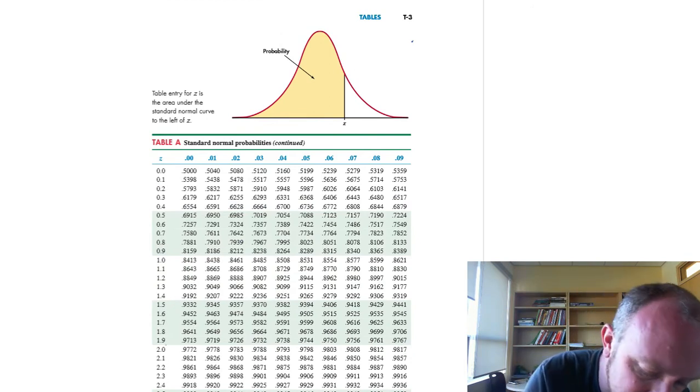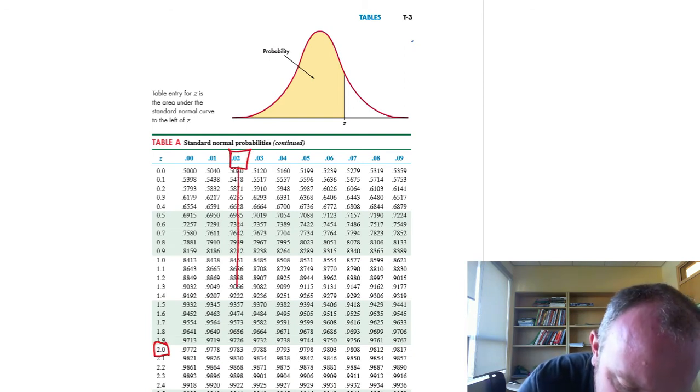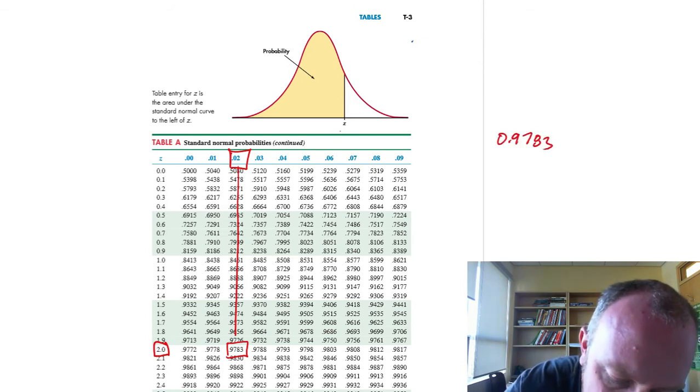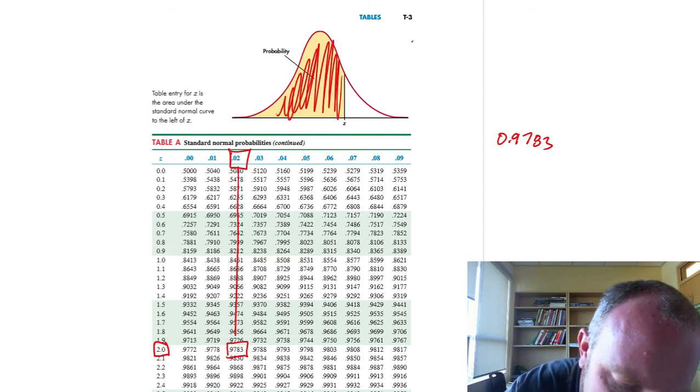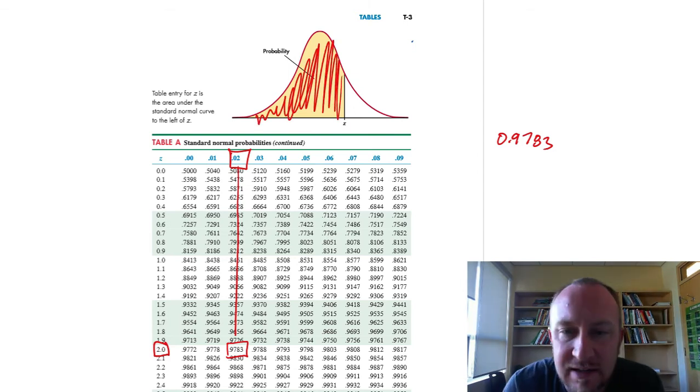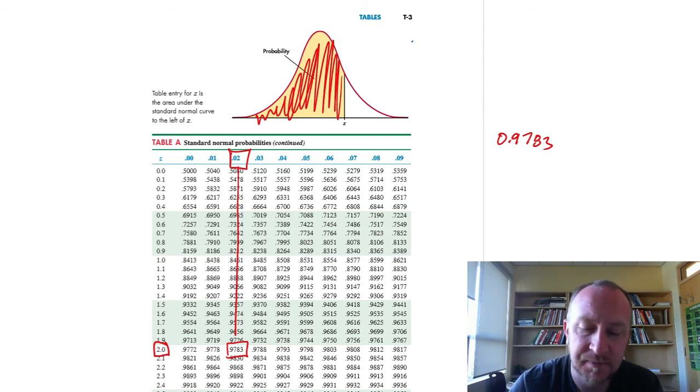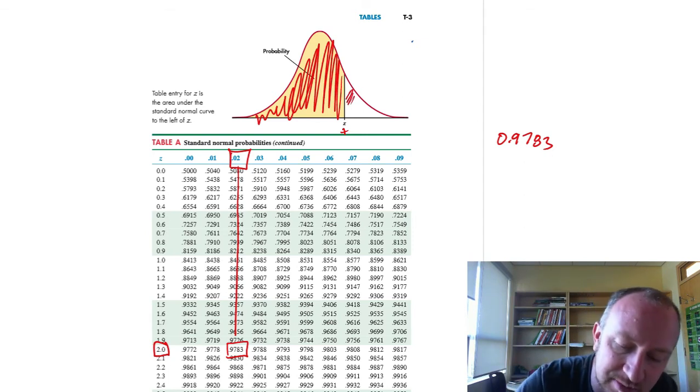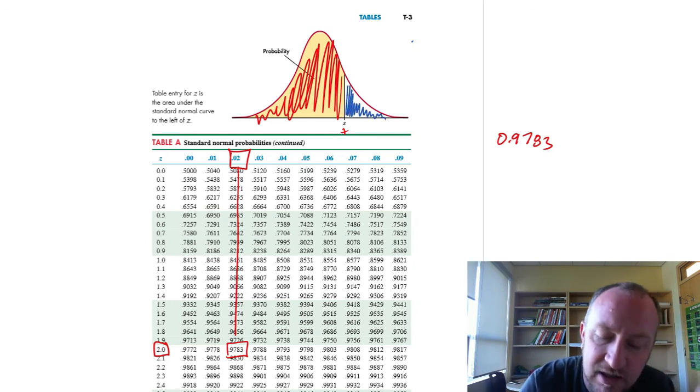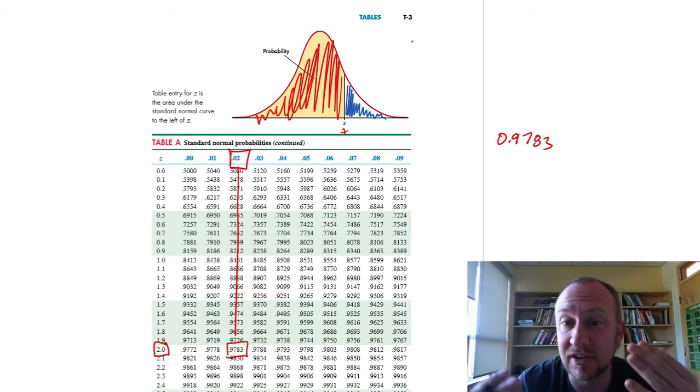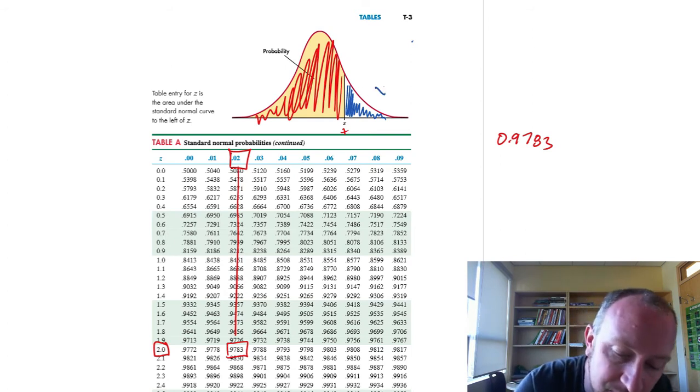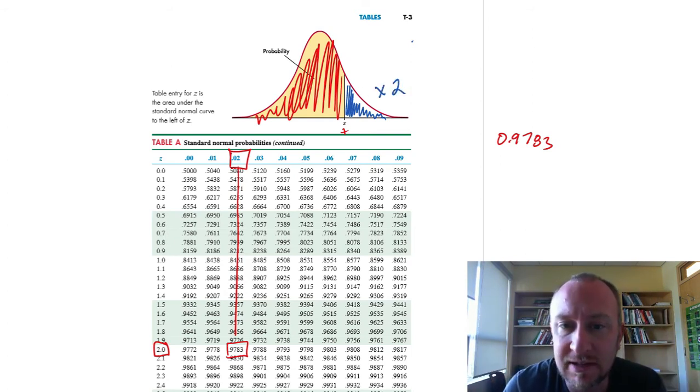My test statistic was 2.02. Where those two numbers come together, here I have that value of 0.9783. This is giving us this area to the left. When we're doing a two-tailed test, what we want is the probability in one of the extreme ends. So if I have a positive test statistic, which in this case I do, the probability that I want is that upper tail. And then, just as we did in the first video, because this is a two-tailed test, we would multiply that probability by 2 in order to obtain our p-value.